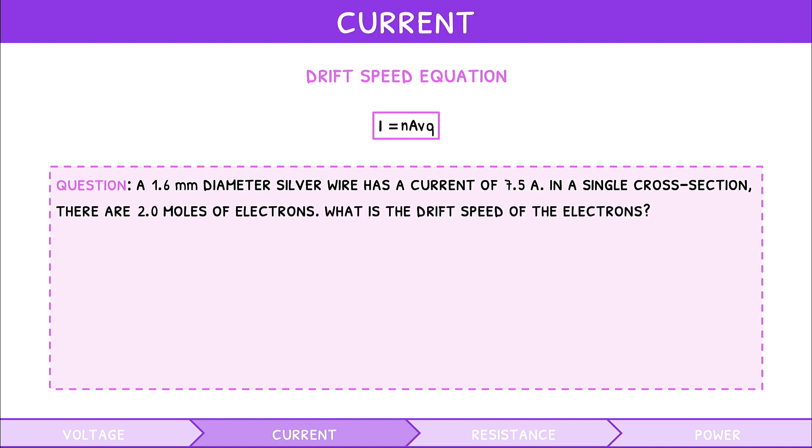The equation to use for this is current equals number of charges times cross-sectional area times speed times charge value. First, the number of charges is calculated as moles times Avogadro's number. Then the cross-sectional area is calculated as pi times radius squared. Then we substitute in the values for current, number of charges, cross-sectional area, and electron charge. After simplifying, the drift speed of the electrons is calculated as 19 meters per second.